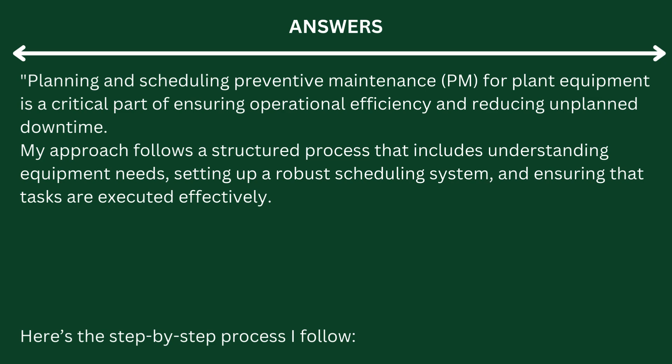Planning and scheduling preventive maintenance (PM) for plant equipment is a critical part of ensuring operational efficiency and reducing unplanned downtime. My approach follows a structured process that includes understanding equipment needs, setting up a robust scheduling system, and ensuring that tasks are executed effectively. Here's the step-by-step process I follow.